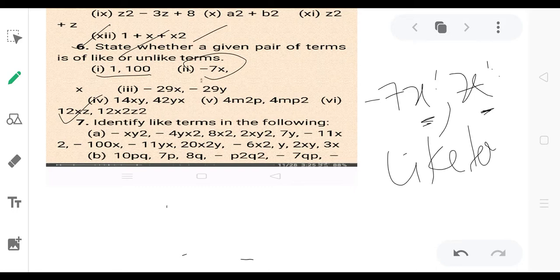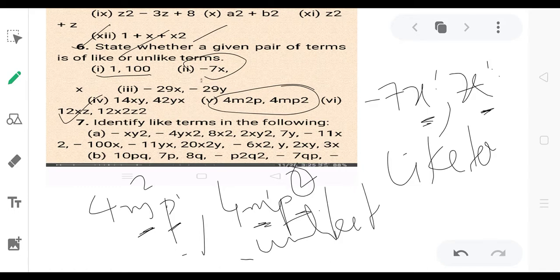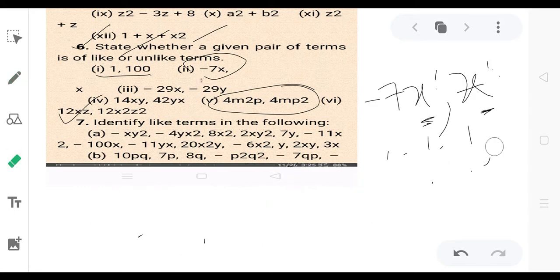Next we have 4m²b and 4mp². Looking at the powers, we have m² in one term and mp² in the other. These have different variable combinations, so these are unlike terms.